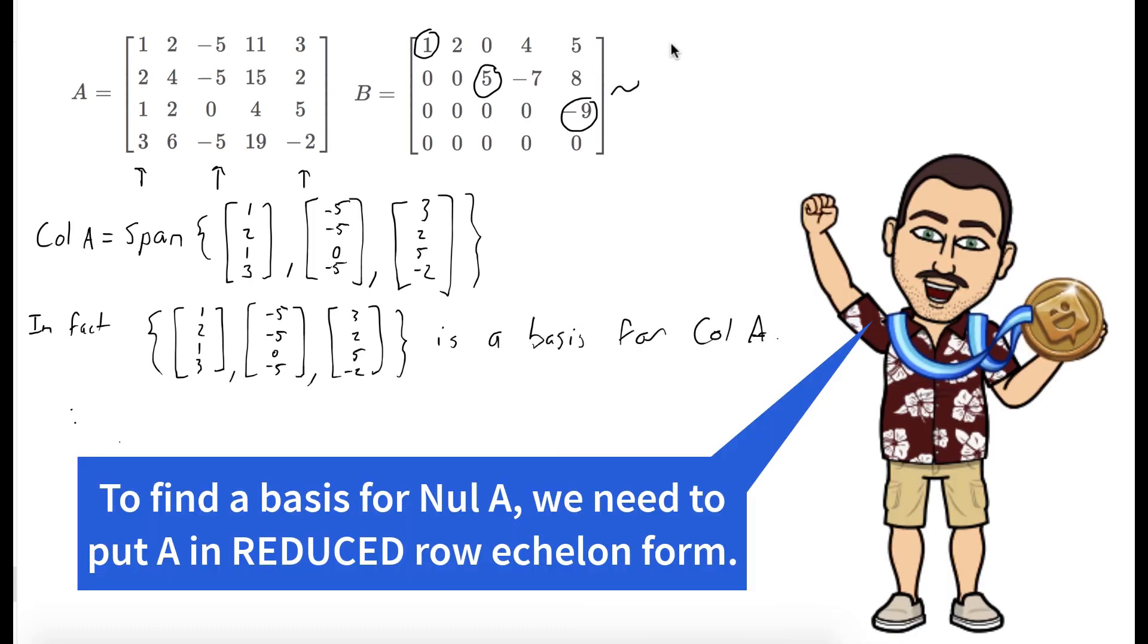And so now we want to find a basis for the null space of A. So what we'll do is we'll reduce our matrix into reduced row echelon form.